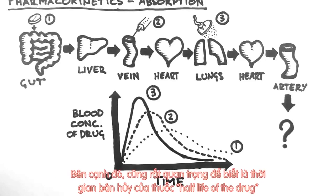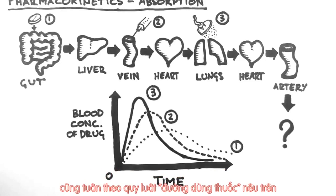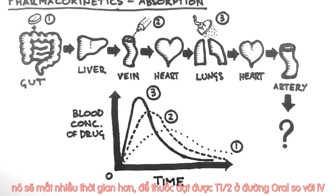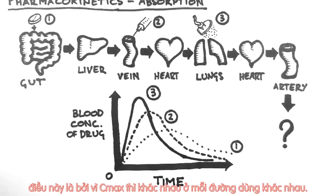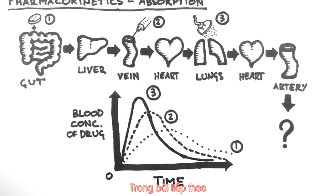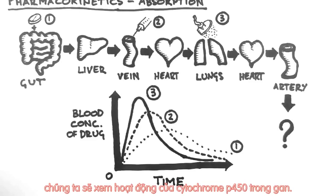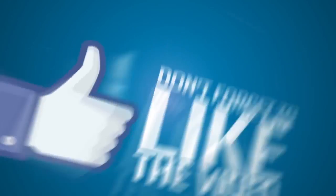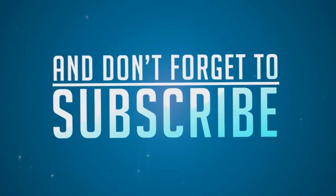It's important to note that the half-life of the drug is the same regardless of the route of administration. This is because the half-life is a property of the drug, not the route. It will take the same amount of time for the drug to reach half of the C-max orally as it will to reach half of the C-max intravenously. This is because the C-max is different for each route and the rate of excretion is proportional to the current concentration. In the next tutorial, we'll look at the metabolism of drugs — in particular, the actions of cytochrome P450 in the liver.